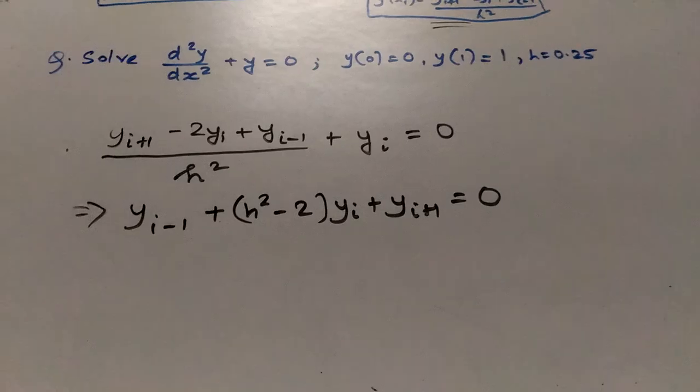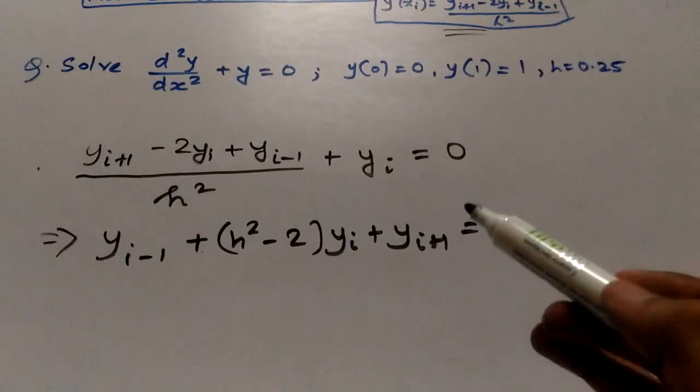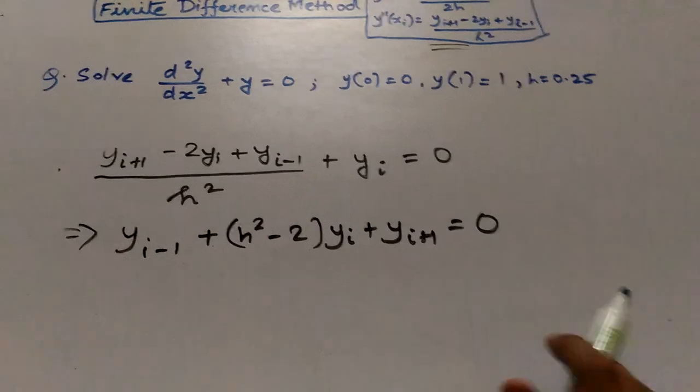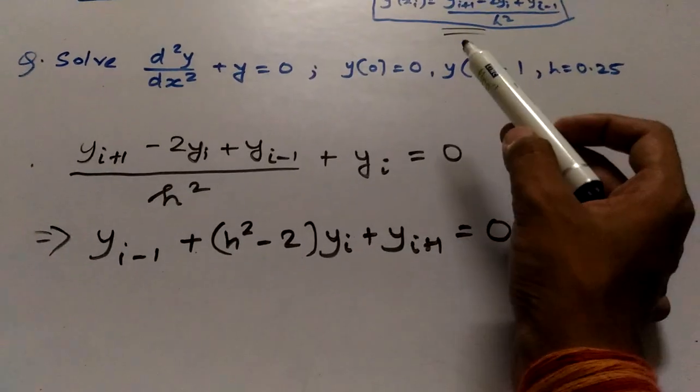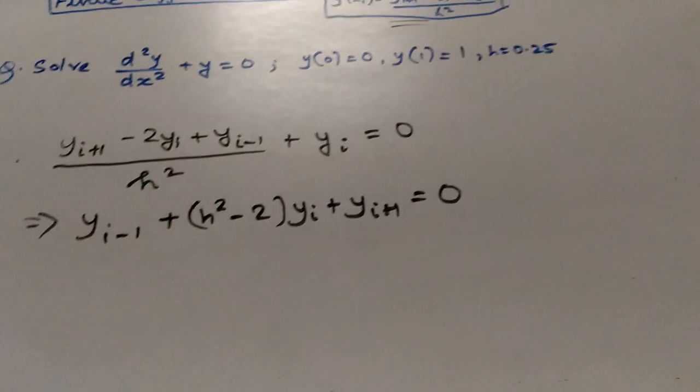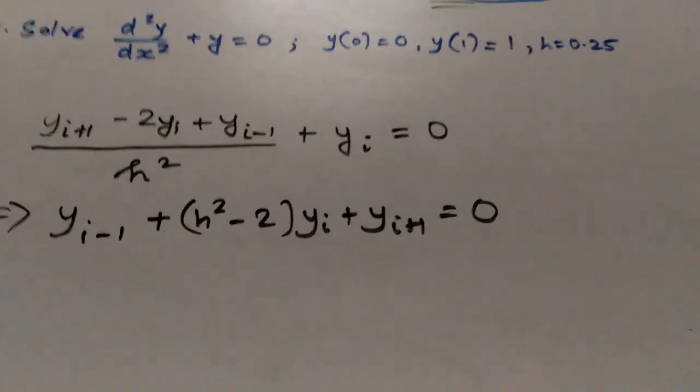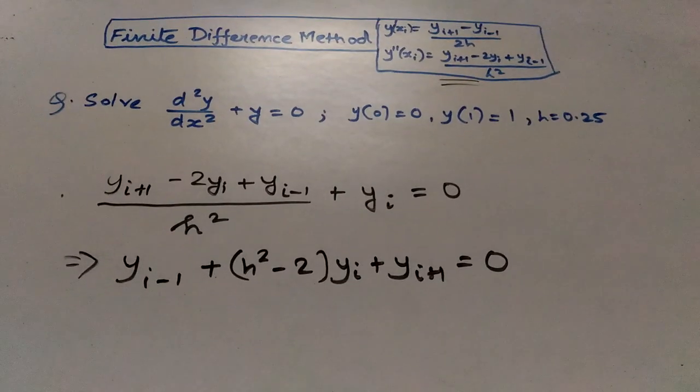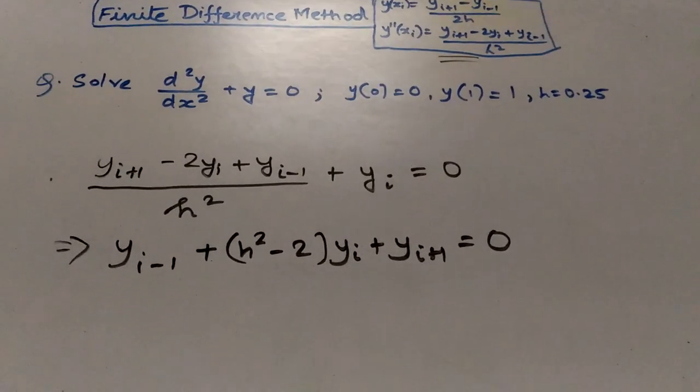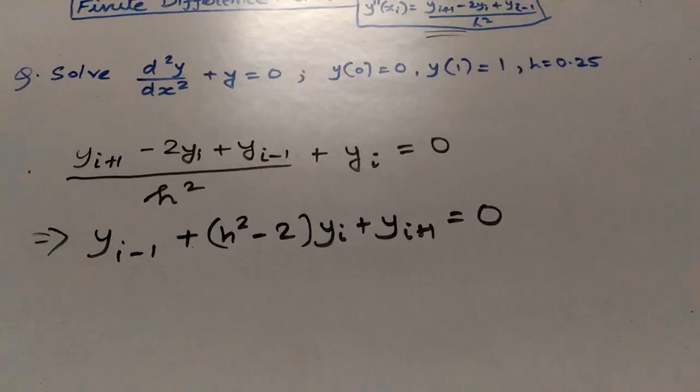Since the boundary condition is x equals 0 and x equals 1, and also our h is 0.25, therefore the values of i will range from 0 to 3.